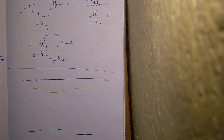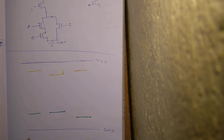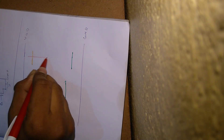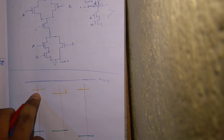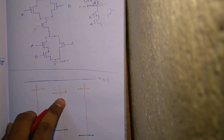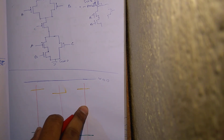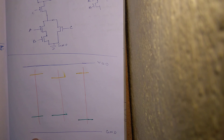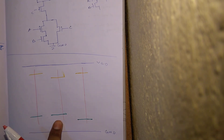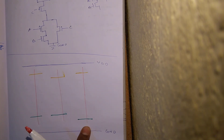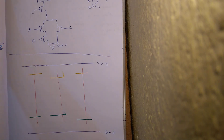Now let us move to the second step. The second step is simply to draw the polysilicon lines. This is my polysilicon, and this is my polysilicon. This is a PMOS transistor with input A, this is a PMOS transistor with input B, this is a PMOS transistor with input C. And this becomes my NMOS transistor with input A, NMOS transistor with input B, and NMOS transistor with input C. I am done with my second step.